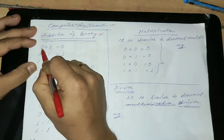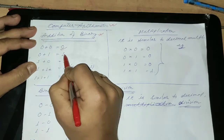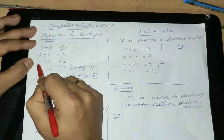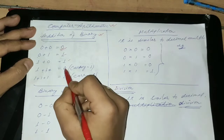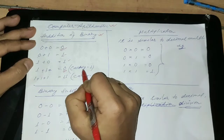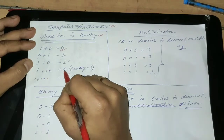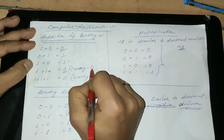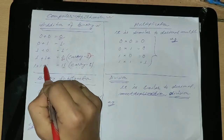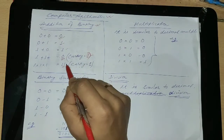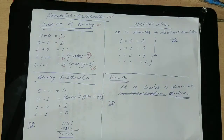Whenever you add 0 and 0, it becomes 0. And 0 plus 1 is equal to 1. 1 plus 0 is equal to 1. And 1 plus 1 is equal to 0, but here you have to keep in mind that it will carry 1 in hand. So 1 plus 1 is equal to 0, and 1 carries in hand. This thing you have to remember all the time. And 1 plus 1 plus 1 is equal to 11, but it carries 1 in your hand. You can take a screenshot of it.